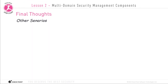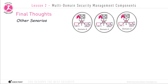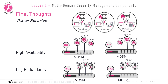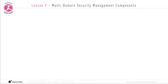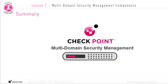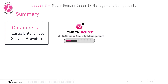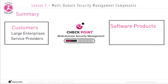There could be multiple other deployment scenarios for the multi-domain security management server, such as high availability mode or redundant logging solutions, but we won't cover those in this video. This lesson was meant to give a general overview of the MDSM server products and some of their deployment options. In summary, MDSM is the Checkpoint Multi-Domain Security Management Solution, used by large enterprises and service providers. When installing MDSM software, you have two types of products: the MDS that houses the DMSs, and the MDLS that houses the DLSs.